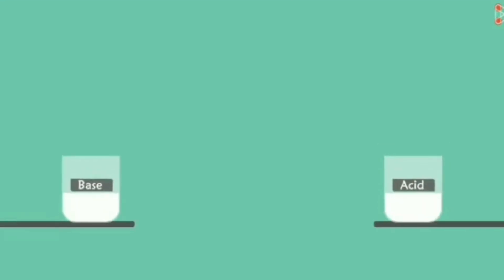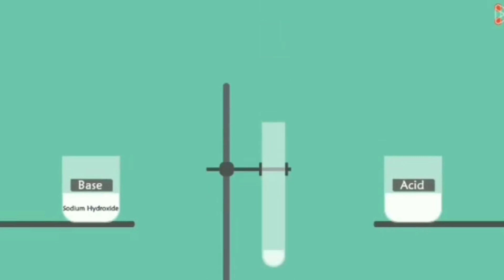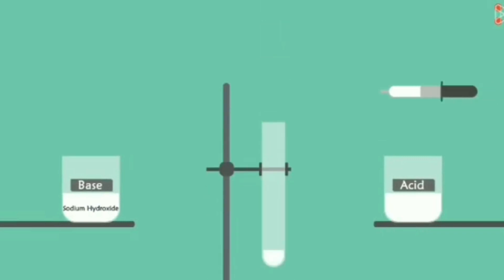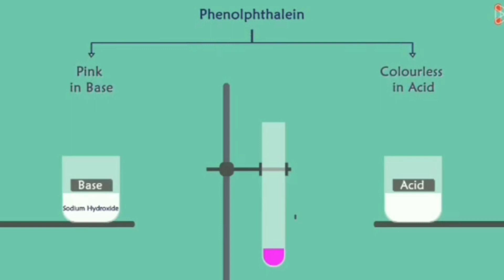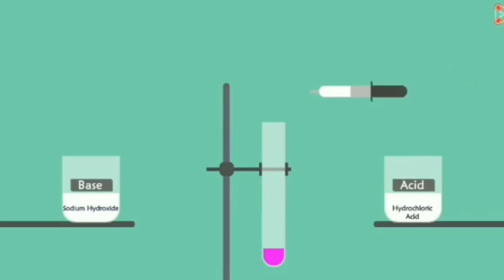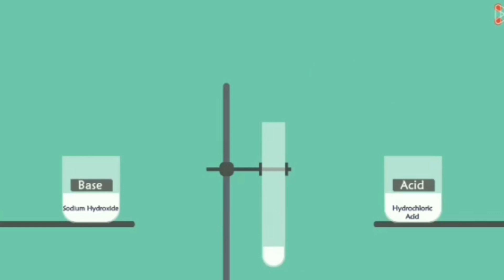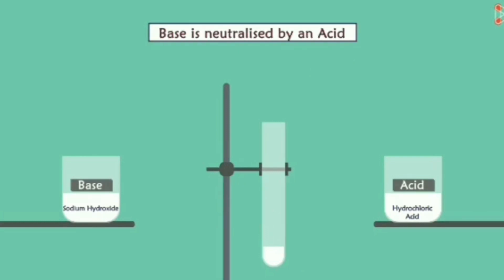Activity 2.6: how do acids and bases react with each other? Take 2 ml of dilute sodium hydroxide solution into a test tube and add phenolphthalein solution — you can see the solution turns pink. Phenolphthalein is an indicator which turns colourless in an acid and turns pink in a base. Now add dilute hydrochloric acid solution into the test tube and the solution turns colourless again. By this, we can understand that a base is neutralized by an acid.